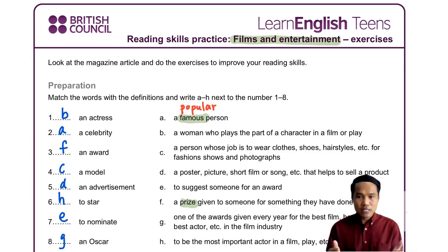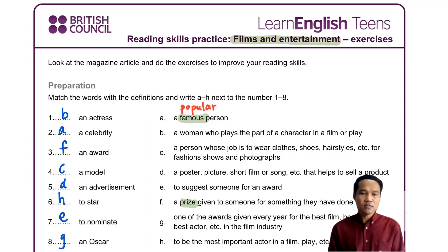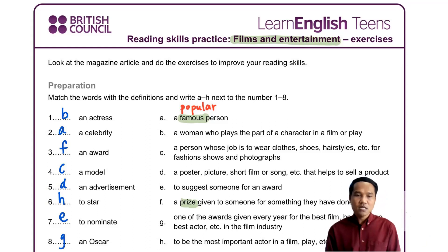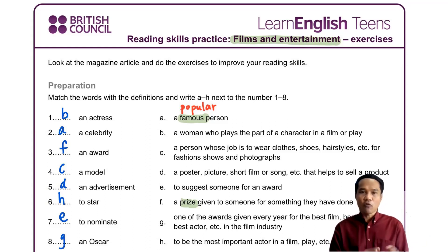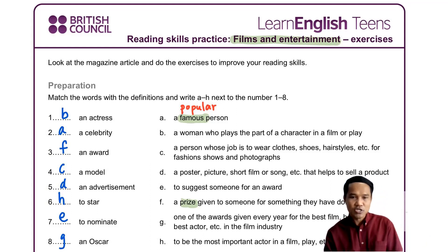Let's repeat after me one more time. Number one: actress. Number two: celebrity. Number three: award. Number four: model. Number five: advertisement. Number six: star. Number seven: nominate. Number eight: Oscar. That is the vocabulary that we cover before we go to read the text on the next page.